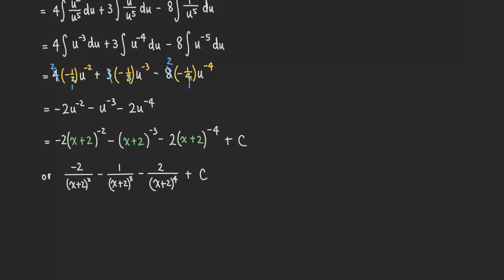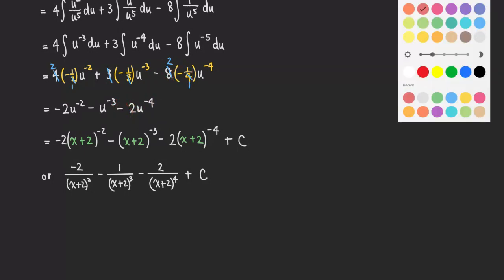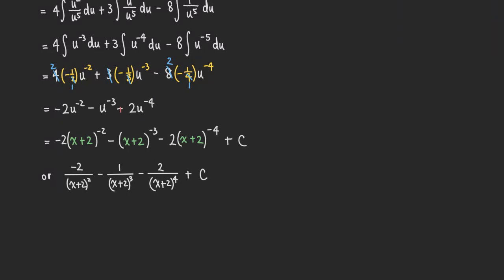And then we are finished. Oh, I actually made a sign error — that's a minus and another minus, so that term becomes a plus. Let me mark that: the sign should be a plus there. So that should be a plus sign, and then there's no more problem. That's it for this problem.